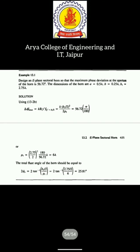This is one numerical and this is the type of numerical which you are going to face in your examination related to the design of E-plane sectoral horn. Design an E-plane sectoral horn so that the maximum phase deviation at the aperture of the horn is specified. The dimensions of the horn are given and you have to apply the formula k multiplied by del y-dash where y-dash is equal to b1/2. You have to find the values from the given parameters and this is one example so that you can be familiar with the type of design related numerical.